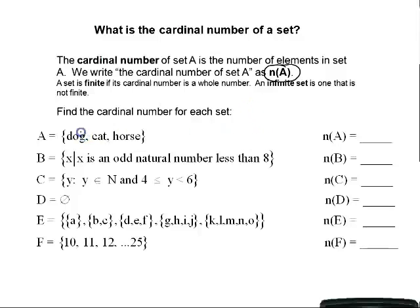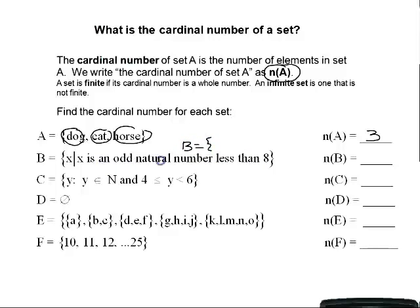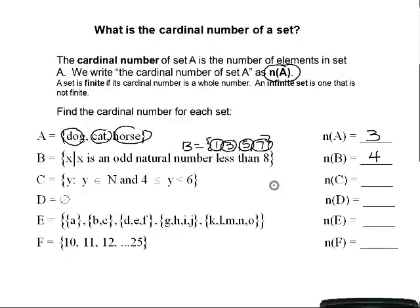We're going to find the cardinal number of each set. Set A has dog, cat, and horse — three members — so the cardinal number of set A is 3. Set B is the set of all x such that x is an odd natural number less than 8. In roster notation that is 1, 3, 5, and 7 — four elements — so the cardinal number of set B is 4.